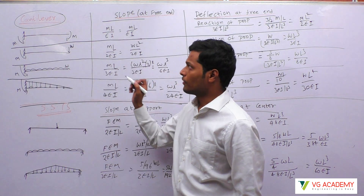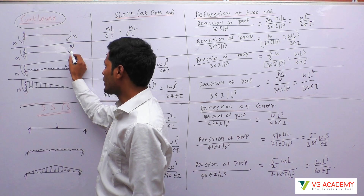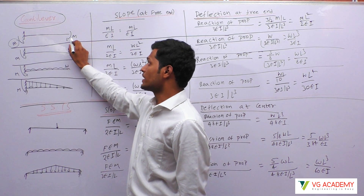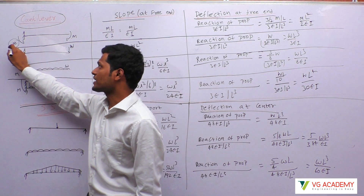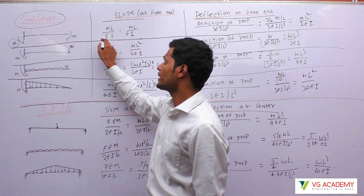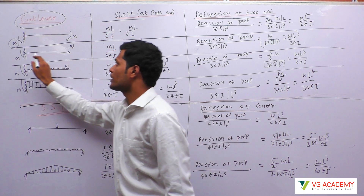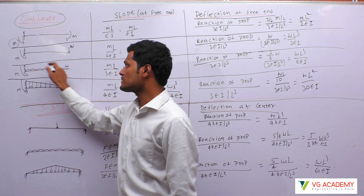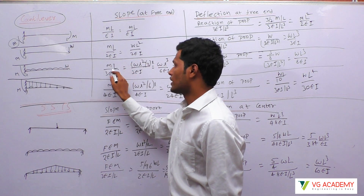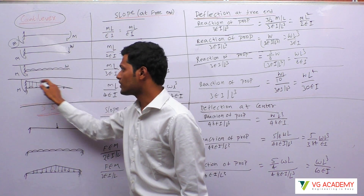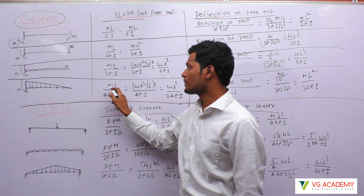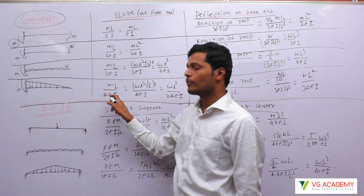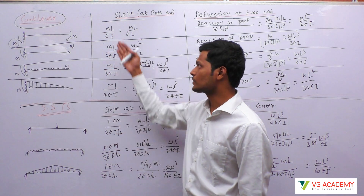For a cantilever, the four major cases are: moment, point load, UDL, and UVL. If there is a concentrated moment M, the slope is ML by EI. If there is a point load, the slope is ML by 2EI. If there is a UDL, the slope is ML by 3EI. Similarly, if there is a UVL, the slope is ML by 4EI. So the order is ML by EI, 2EI, 3EI, 4EI — that is how it reduces.